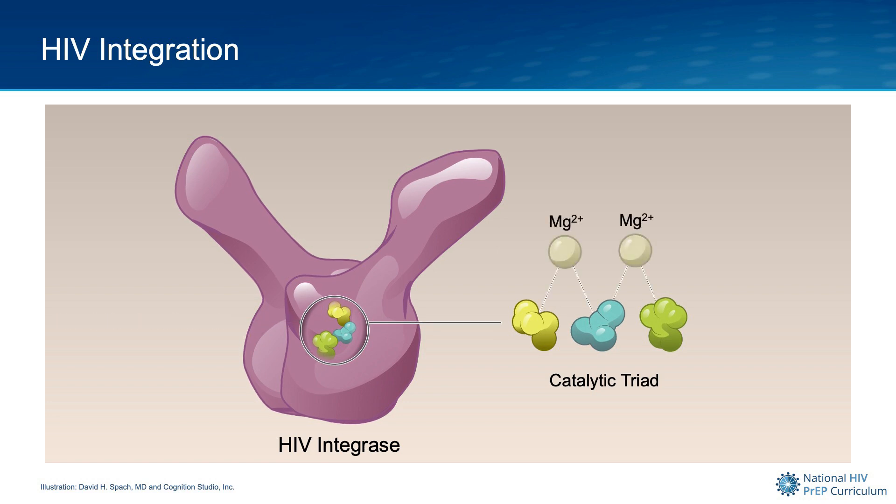The catalytic triad binds to a divalent cation — usually magnesium, as shown here. The magnesium serves as an enzyme cofactor. I'm showing this level of detail since it's really important for understanding how cabotegravir works.